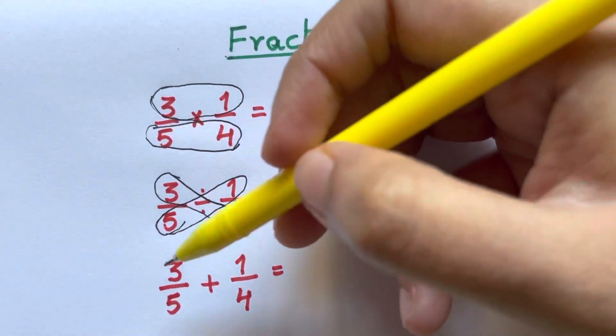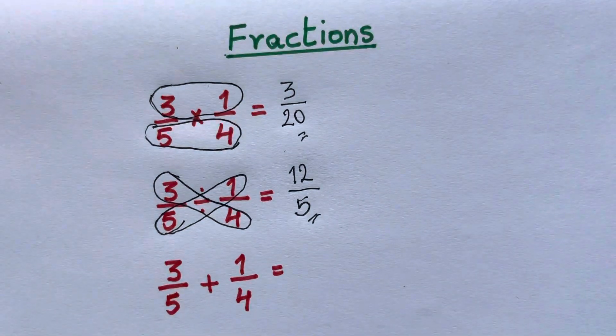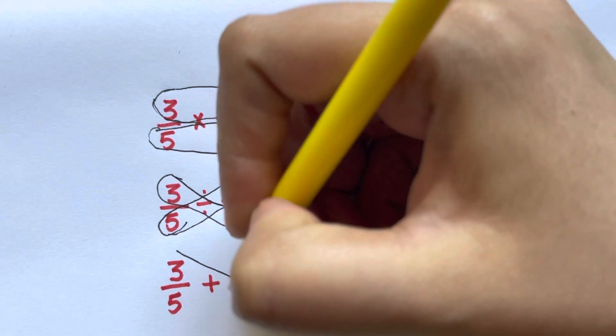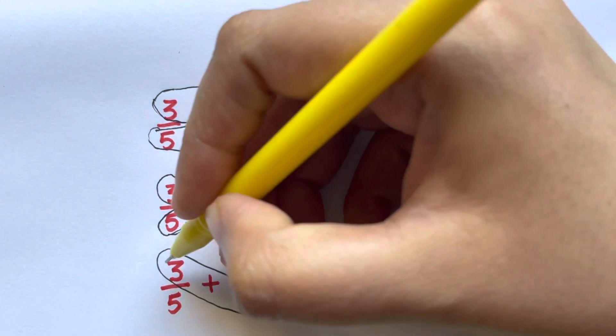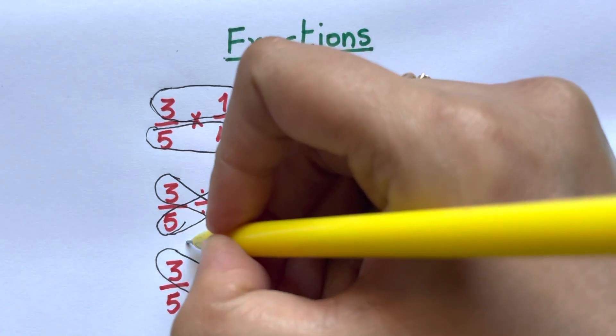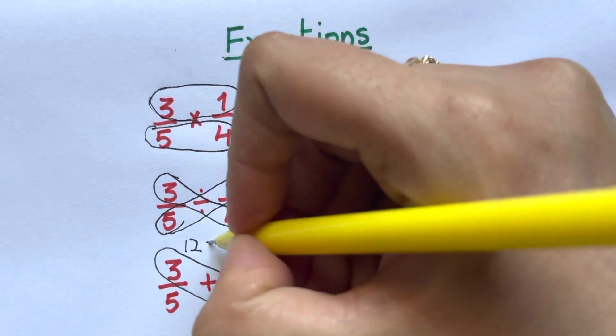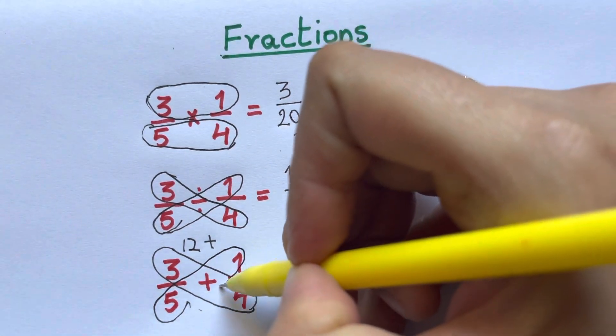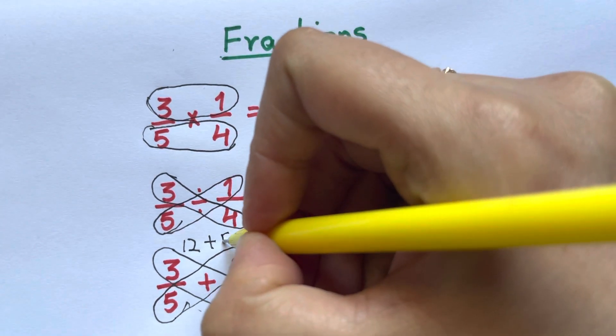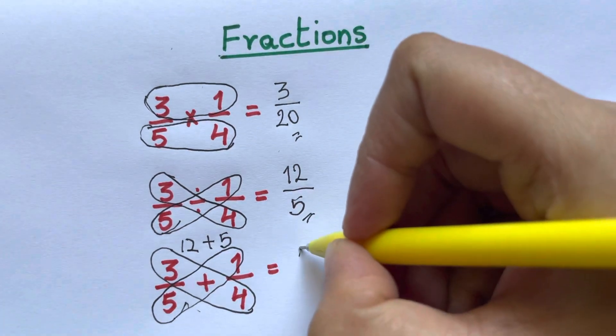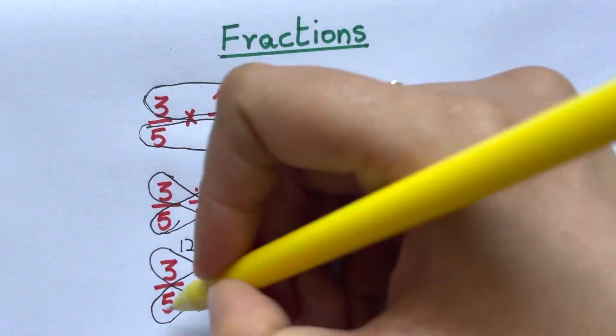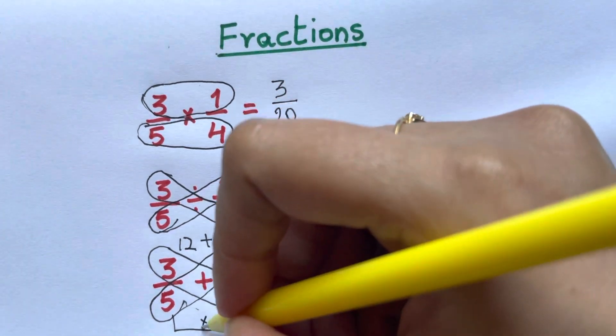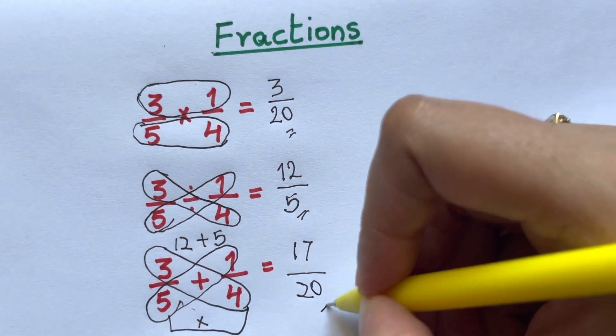And for the addition of fractions, 3 over 5 plus 1 over 4. All you have to do is cross multiply. Bubble up 3 and 4 and multiply them together. 3 multiplied by 4 is 12. Now bubble up 5 and 1 and multiply them together. So 12 plus 5 will give you 17. Now for the denominator, multiply 5 times 4. That is 20. So this is your answer, 17 over 20.